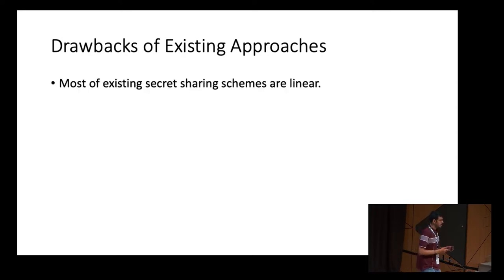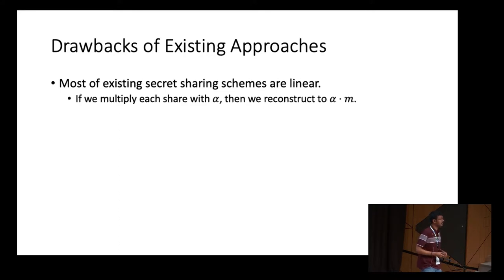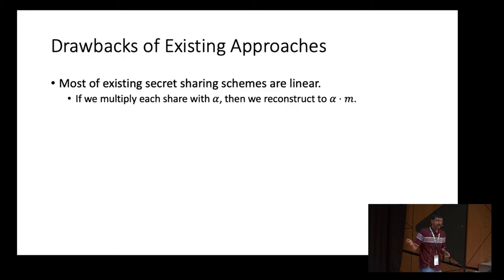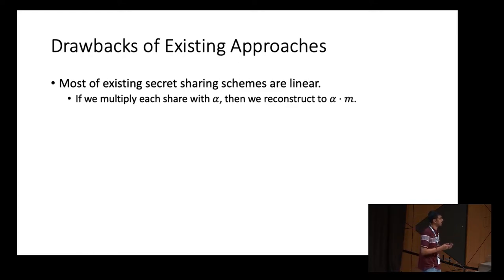Let us see why existing cryptographic primitives do not provide a reasonable solution. Most existing secret sharing schemes in the literature are linear: if you multiply each share with some constant alpha, the reconstructed secret will be alpha times M. This property has been crucially used in many applications including secure multiparty computation, but it trivially allows tampering attacks, since each tampering function can just multiply the shares with alpha to tamper with respect to a related secret.